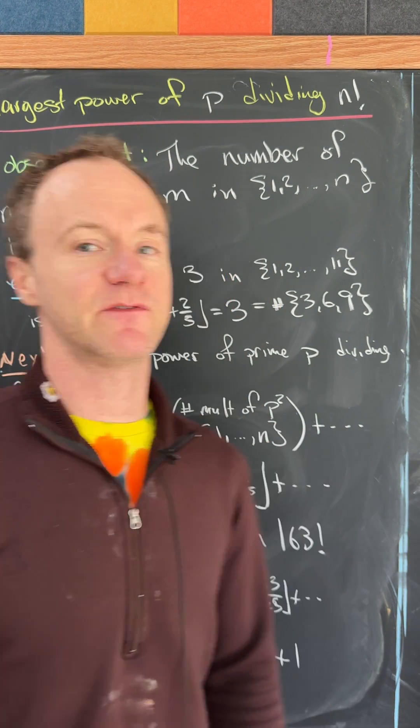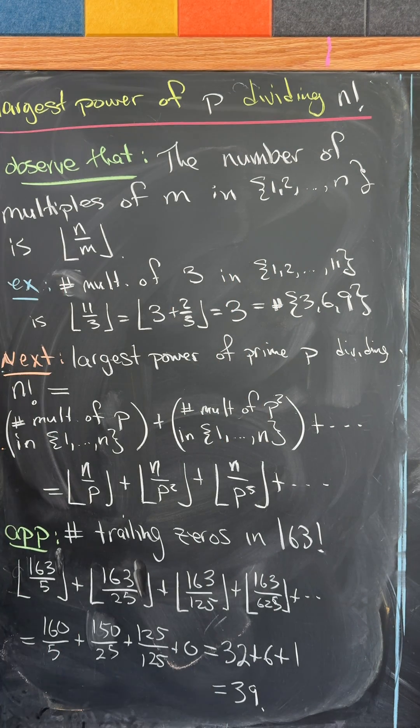Let's find the largest power of a prime that divides n factorial. But first, let's observe that the number of multiples of m in the set containing 1, 2, 3 up to n is the floor of n over m.